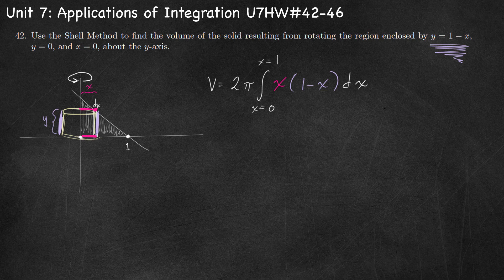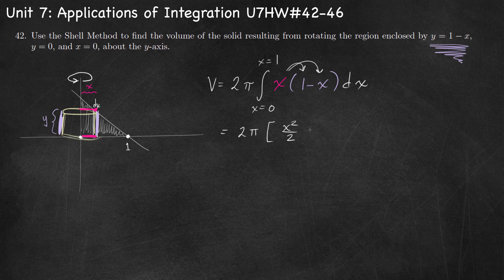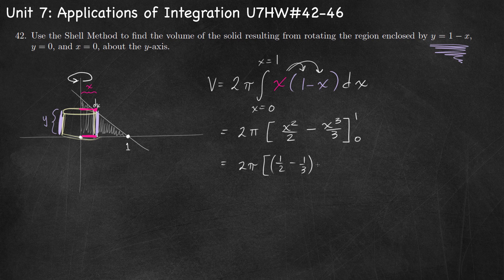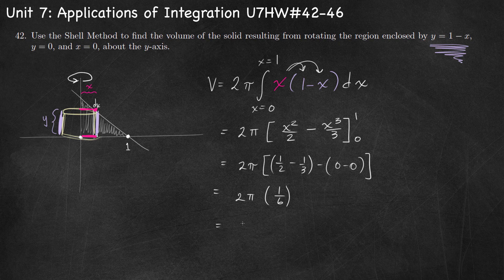We multiply by dx. So there's our setup for the volume, and we can integrate by hand. We distribute x: x times 1 is x, and integrating gives x squared over 2. Then x times negative x is negative x squared, and integrating gives negative x cubed over 3. Evaluating from 0 to 1: it's 2 pi times (1/2 minus 1/3). Getting a common denominator of 6: that's 3/6 minus 2/6, which is 1/6, for a final answer of pi over 3.